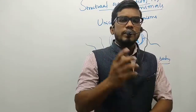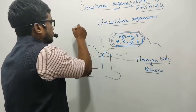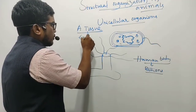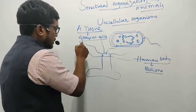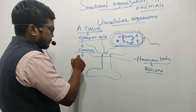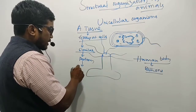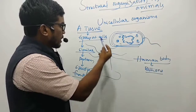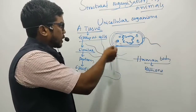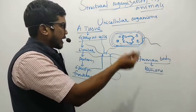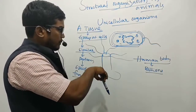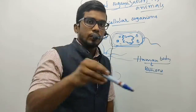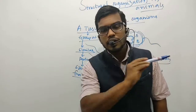Now let us understand what we mean by a tissue. A tissue is a group of cells that are similar and perform specific functions altogether as a unit. The group can consist of thousands or lakhs of cells, varying from organism to organism. These similar cells all function together and perform a specific function — that is what we call a tissue.